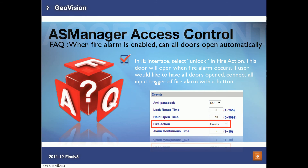For the FAQ section: when a fire alarm is enabled, can all doors open automatically? Yes. In the controller's web UI, go to the fire section under Events and select Unlocked. This way all doors will open when a fire alarm occurs. If you want every door to open when a fire alarm is triggered, you can connect all fire alarm input triggers with a button so pressing the button opens all doors simultaneously.